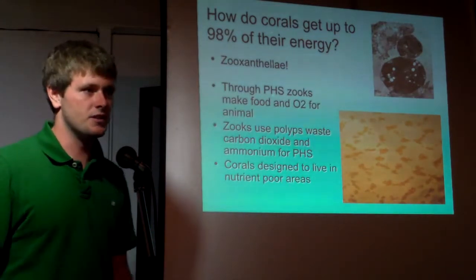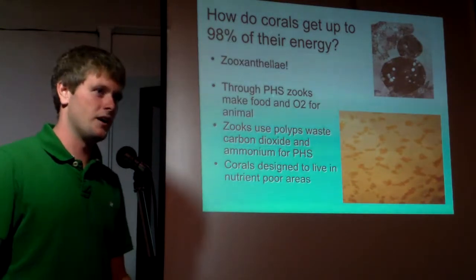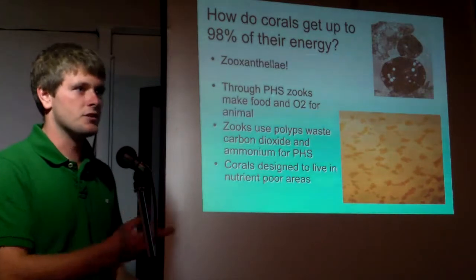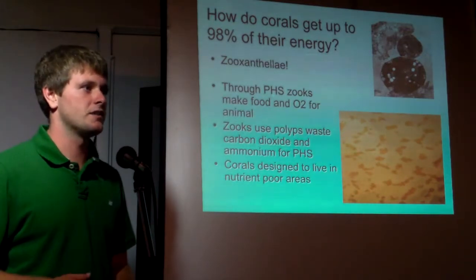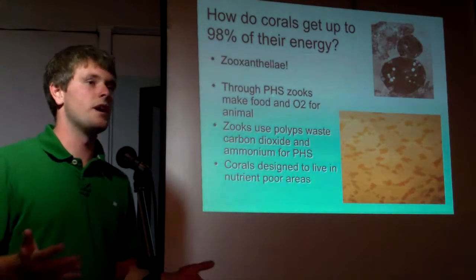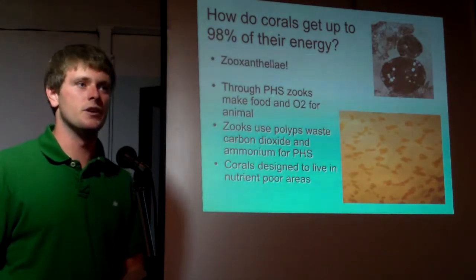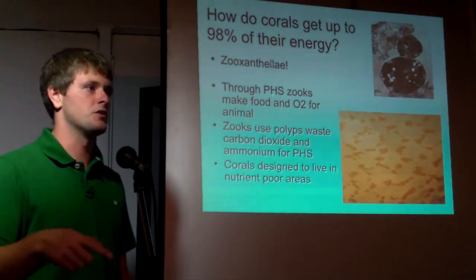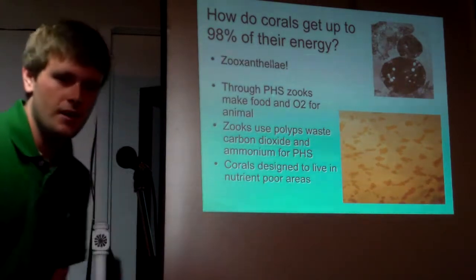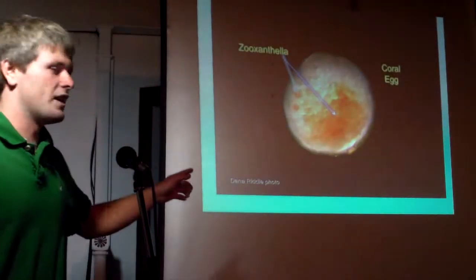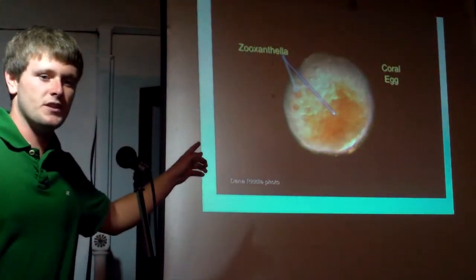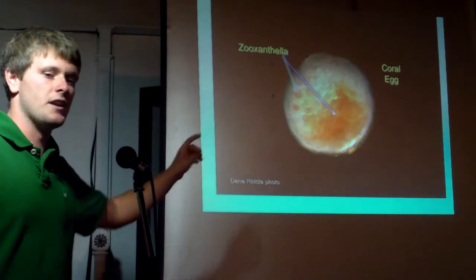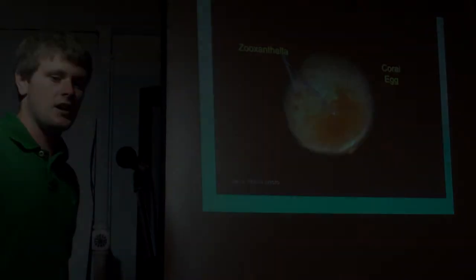Hawaii is generally a low-nutrient environment — historically it definitely was. But now there's concern about wastewater and how it's affecting the reef. One way it would affect the reef is that nutrient input could cause an increase in algae growth that competes with the coral, not only for space but also for sunlight. This just shows that the relationship between the zooxanthellae and the coral starts early — this is a microscopic photo of a coral egg, and it already has the algae in its tissue.